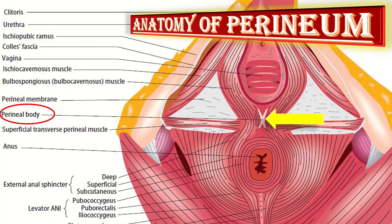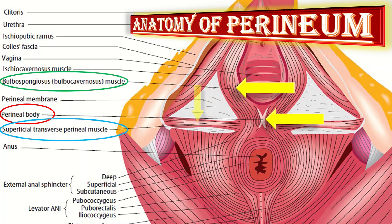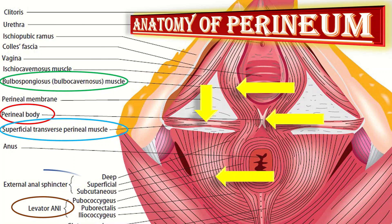The perineal body, or the perineal central tendon, is a wedge-shaped fibromuscular mass that is formed by the convergence of several muscles. Those muscles include: first, the bulbospongiosus; second, the transverse perineal muscles, which may be superficial or deep; third, the levator ani muscle; fourth, the external anal sphincter; and finally, the puborectalis.